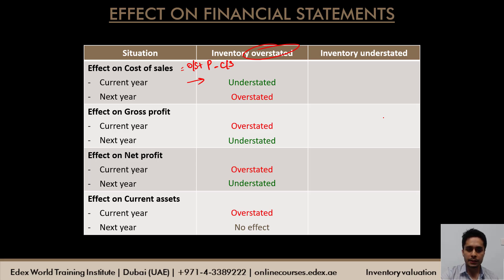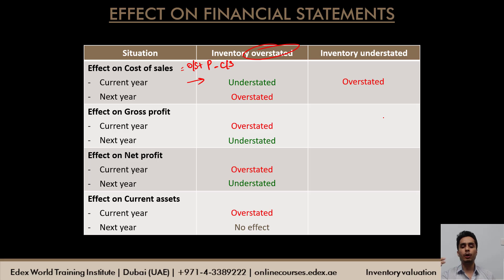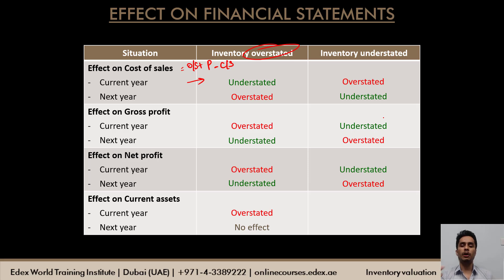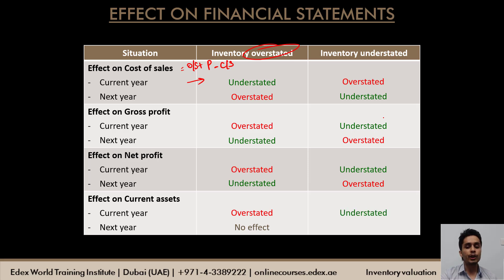When inventory is understated, the effects are completely opposite. Cost of sales will be overstated in the current year because closing stock is subtracted. Next year's cost of sales will be understated. Gross profit will be understated in the current year and overstated next year. Net profit will similarly be understated in the current year and overstated next year. Effect on current assets: if inventory is understated, current assets in the balance sheet will also be understated. No effect on the balance sheet of the next year.